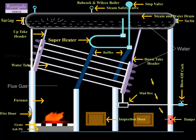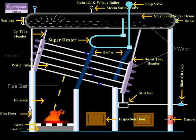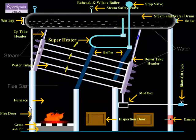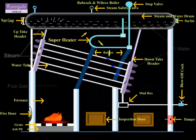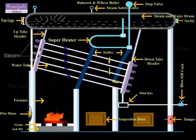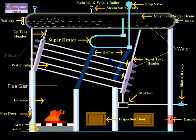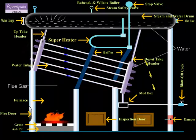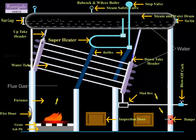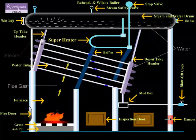Thus, a continuous circulation of water from the drum to the water tubes and water tubes to the drum is maintained. The circulation of water is maintained by convective currents and is known as natural circulation.